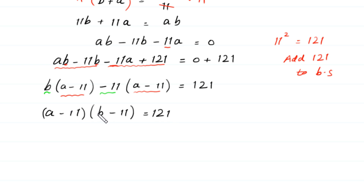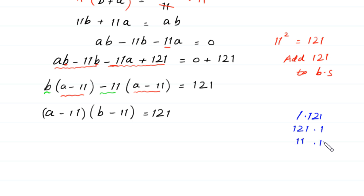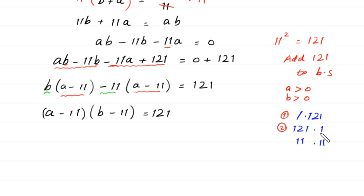We have two factors on the left side, so we factorize 121. This 121 can be factorized as 1 times 121, 121 times 1, and 11 times 11. Because we are looking for positive values where A is greater than 0 and B is greater than 0, we have three cases.